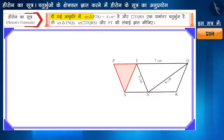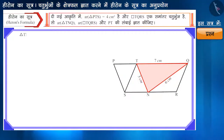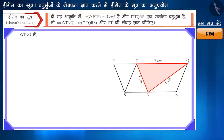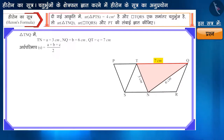समानांतर चतुर्भुज TQRS का क्षेत्रफल और भुजा PT की लंबाई ज्ञात कीजिए। दोस्तों, आकृति में हमें TNQ की तीनों भुजाओं का माप दिया गया है। इसमें हम हेरोन के सूत्र का उपयोग कर इस त्रिभुज का क्षेत्रफल आसानी से ज्ञात कर सकते हैं। सबसे पहले हम इसका अर्ध-परिमाप यानी s ज्ञात करेंगे। भुजा TN की लंबाई को a, भुजा NQ की लंबाई को b, और QT की लंबाई को c मान लेते हैं। अब s बराबर होगा इन तीनों भुजाओं के योग बटे दो के।